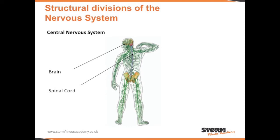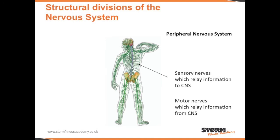There are also two structural divisions of the nervous system. The central nervous system, made up of the brain and the spinal cord. And the peripheral nervous system, made up of the sensory nerves which relay information to the central nervous system, and motor nerves which relay information from the central nervous system.